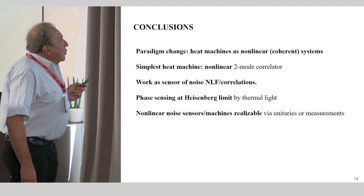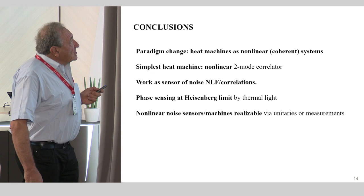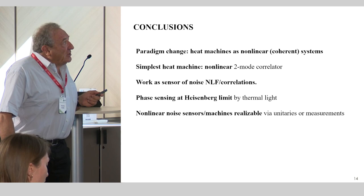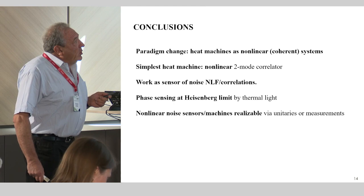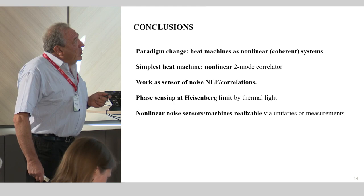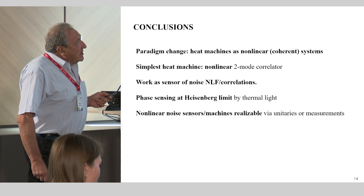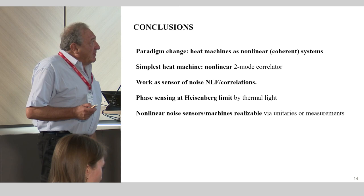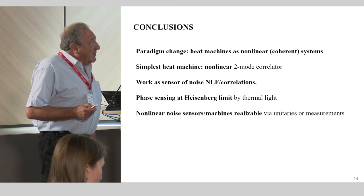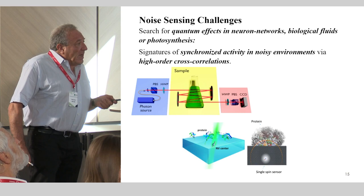I will skip that and come to the conclusions. What I've shown is first a paradigm change in the concept of heat engines, which can be realized by nonlinear coherent systems, as opposed to existing heat engines. With the simple nonlinear two-mode correlator, we can use work output as a sensor of the noise correlations and you can achieve phase sensing at the Heisenberg limit by thermal light. This can be done either unitarily or by means of measurements. There are interesting perspectives which we are studying now in the context of biology with our partners based on such noise correlations. Thank you very much.